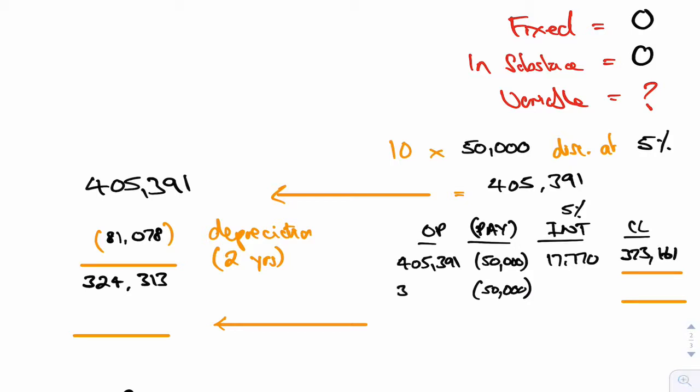Now do year two. 373,161, pay off 50,000. Interest 5% on the balance, which is 16,158. And that will give you a closing balance then of 339,319 at the end of year two.